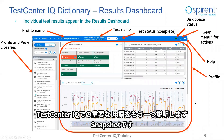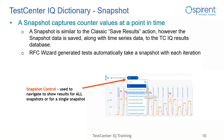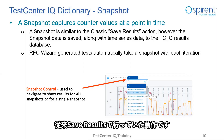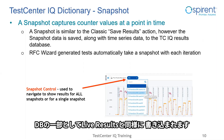Let's cover one more essential keyword in Test Center IQ vocabulary. The snapshot. Notice the snapshot control on the profile bar and again in the time series view. In Test Center IQ terminology, a snapshot is used for capturing counters at a point in time. It's similar to the classic results action of save result. This snapshot data is not saved in a flat file on the user's machine, however. It is saved in the same test database as the live results for the test.